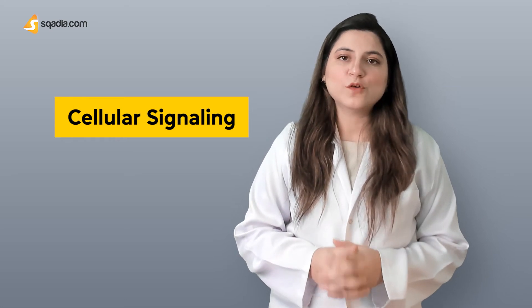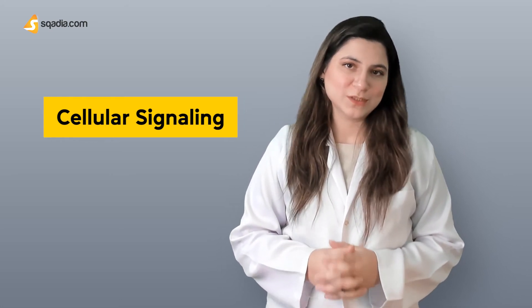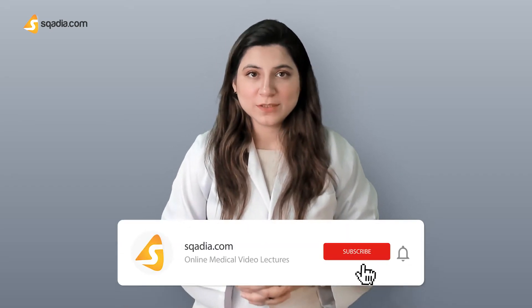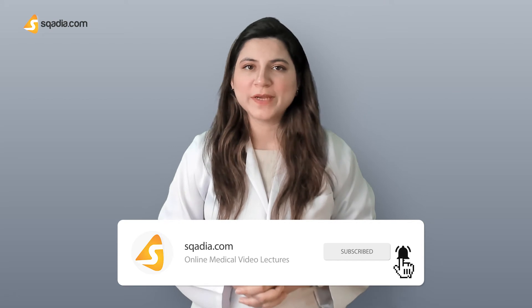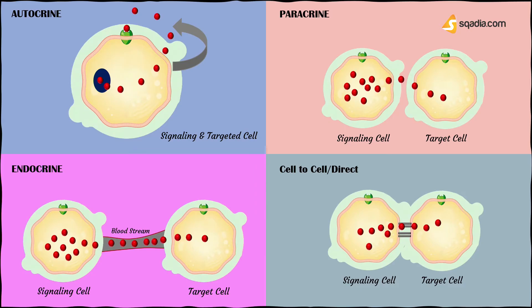Let us first start with the forms of signaling known to us so far. In humans, the complexity of cellular interactions is intense. Therefore, to study and understand it better, the interactions are divided into four major types, depending on how far or near the signal is going to get delivered. These four types are autocrine signaling, paracrine signaling, endocrine signaling, and cell-to-cell contact or direct contact.